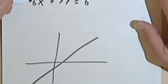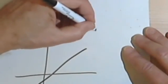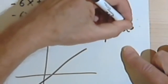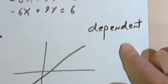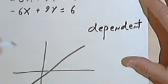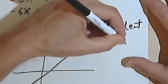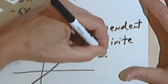When you've got a situation like this, these are called dependent equations. And when you have a system of dependent equations, there's going to be an infinite number of solutions.